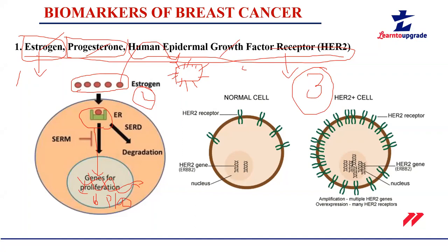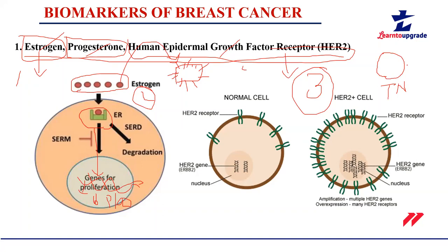Sometimes all three receptors may not be present — a case called triple negative, meaning negative for all three receptors. In that case, the second biomarker that doctors usually check to diagnose breast cancer is circulating tumor cells.